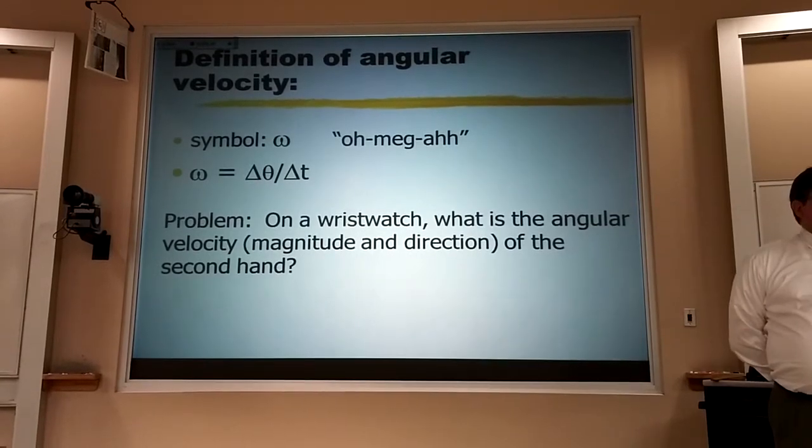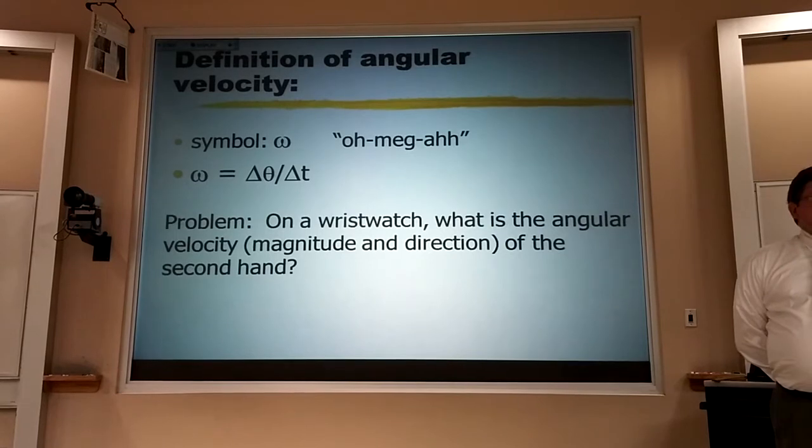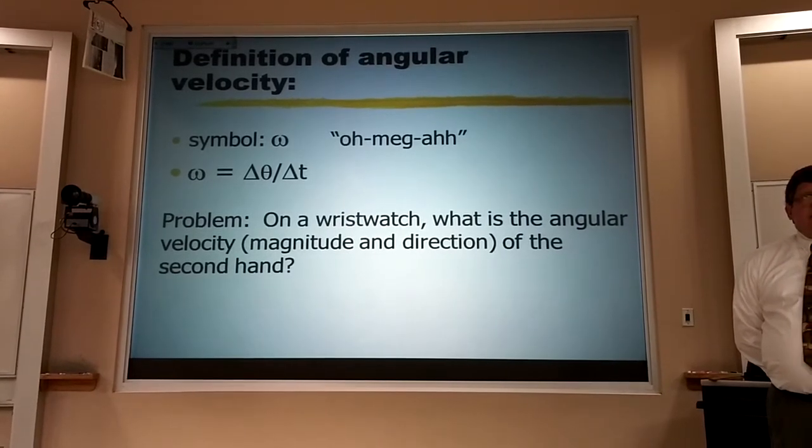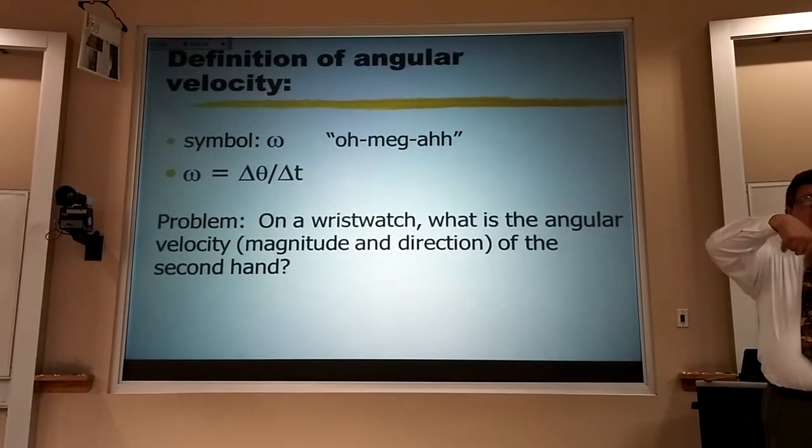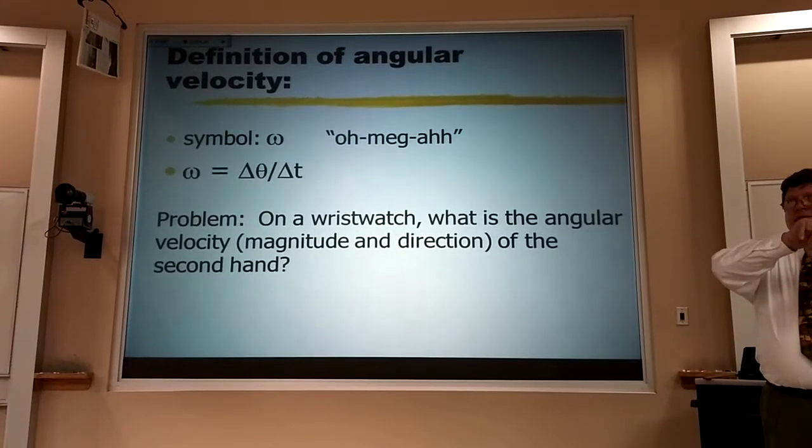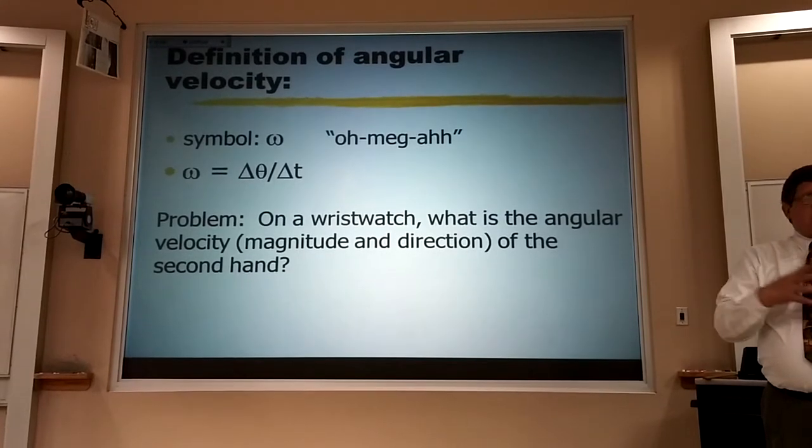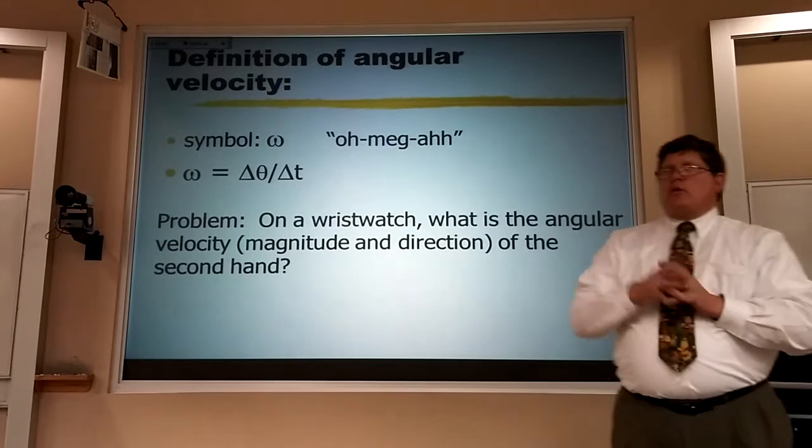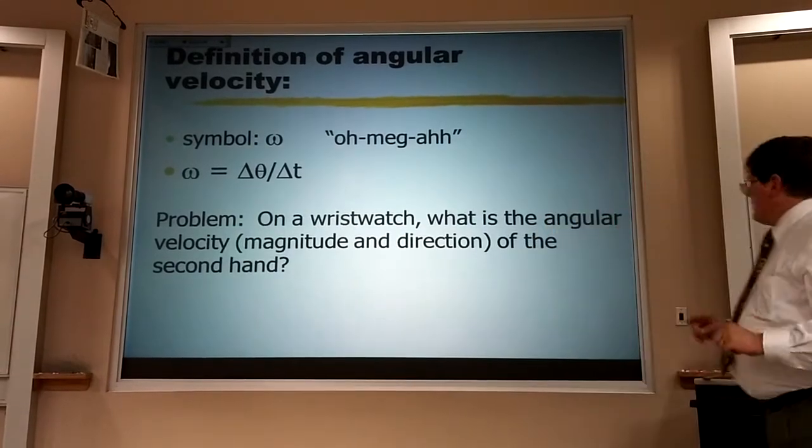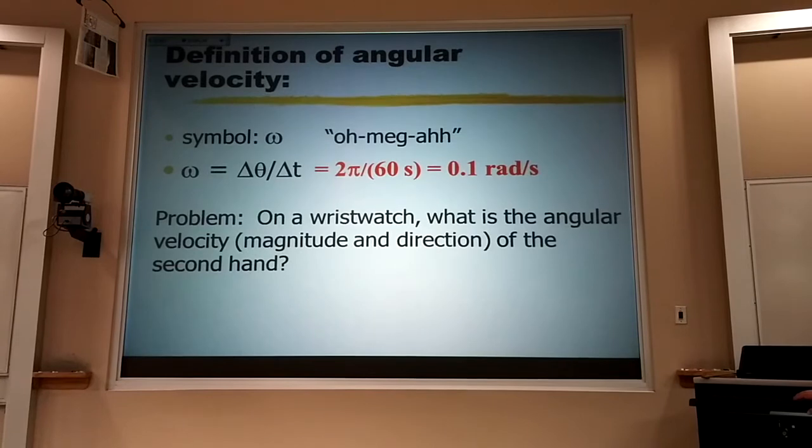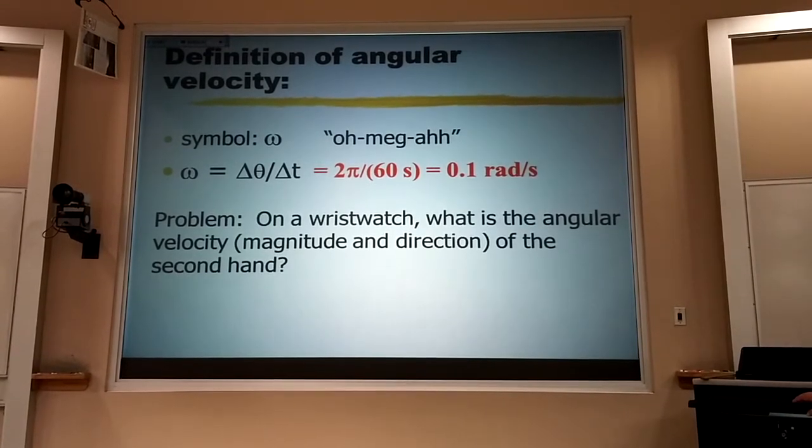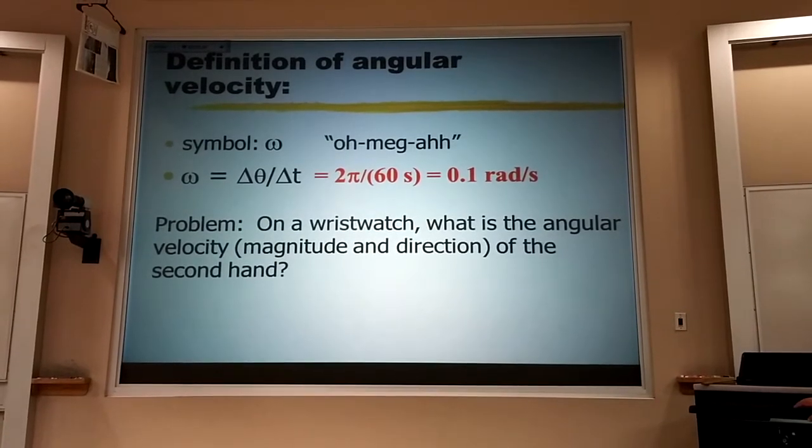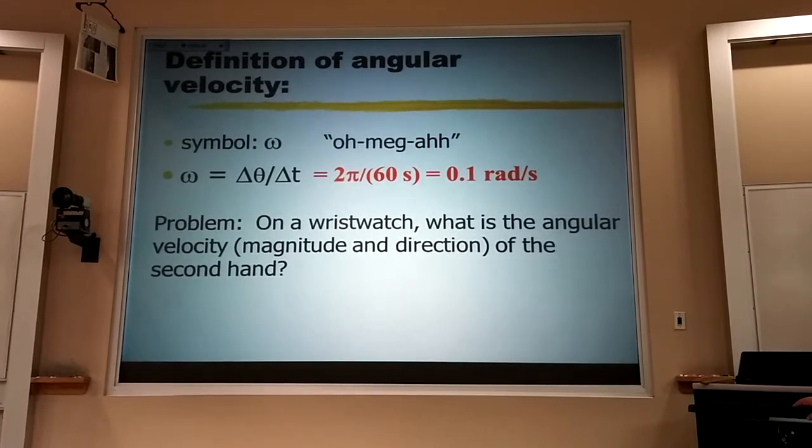Let's look at it together. The magnitude of this velocity is really quite easy to calculate. A second hand goes once around every minute. Well, we usually talk about what angle does it go through in one second. Well, if it goes through 2π radians once around in 60 seconds, and 2π is 6 and change, well, when you divide 6 by 60 you get about a tenth. So it's about a tenth of a radian per second.